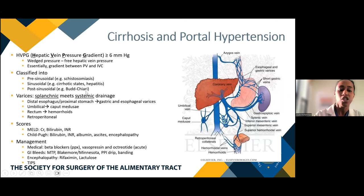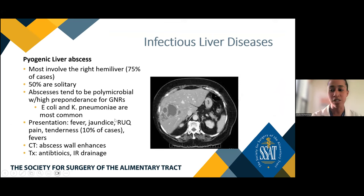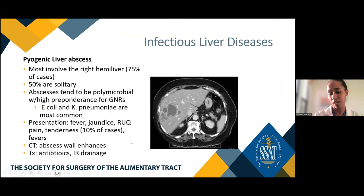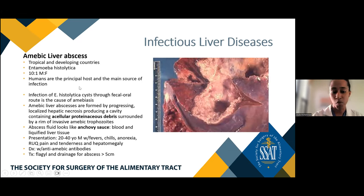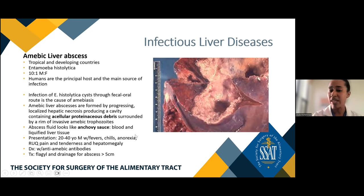Moving on to infectious liver diseases, starting with abscesses. Pyogenic abscesses historically come from untreated appendicitis or diverticulitis. They're most likely in the right liver, usually solitary, and polymicrobial GNRs — E. coli and Klebsiella are most common. Symptoms include fever, sometimes jaundice, and right upper quadrant pain. On CT scan, the abscess wall enhances. Treatment is antibiotics and IR drainage if large enough. For amoebic liver abscesses — found in tropical and developing countries, caused by Entamoeba histolytica — buzzwords are 'acellular proteinaceous debris' or 'anchovy sauce' in the abscess. It's more male predominant. Diagnosis requires serology — anti-amoebic antibodies. Treatment is metronidazole/flagyl and drainage if large.